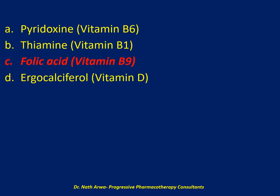Folic acid is known to prevent NTDs in the general population. The United States Public Health Service recommends that all pregnant women and women who might conceive take at least 400 mcg of folic acid daily and continue throughout pregnancy. While other vitamins are crucial for overall health, folic acid is the only one known to lower the risk of NTDs. Women at higher risk of having a child with NTDs are candidates for high doses of folic acid, ranging from 1 mg to 4 or even 5 mg.